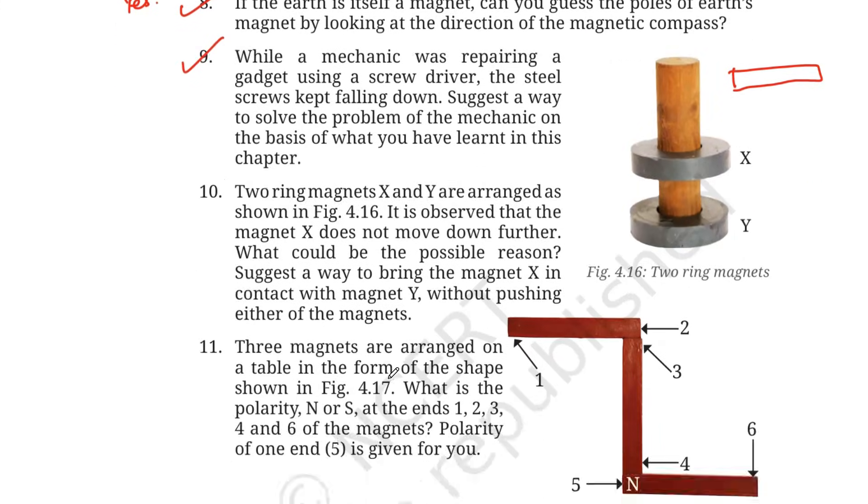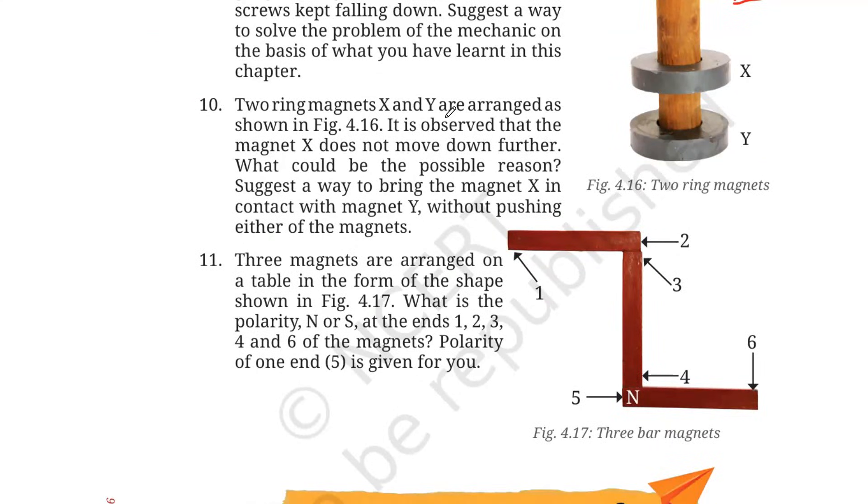Coming to number 10. Two ring magnets X and Y are arranged as shown in this figure 4.16. It is observed that the magnet X does not move further down. What could be the possible reason why it is not coming down? Suggest a way to bring the magnet X in contact with magnet Y without pushing any of the magnets. Why is it not coming down? The possible reason is that like poles are facing each other, causing them to repel, and that is why it is not coming down. So what you need to do, if you want to bring magnet X closer to magnet Y, you flip the magnet Y. When you flip it, then the unlike poles will be facing each other. And we know that unlike poles attract each other, so they will be attracted to each other.